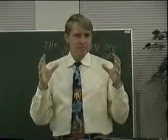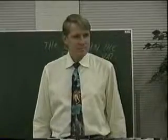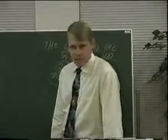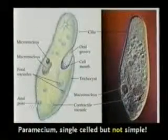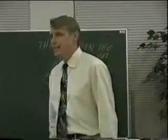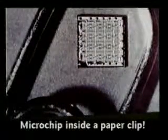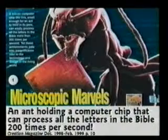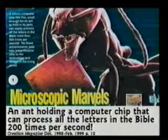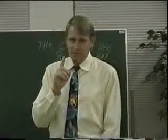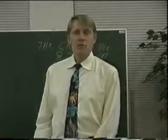It's like walking into a shop full of tools — all of those tools are designed to do something, and each tool has a bunch of parts to it. A paramecium is a single-celled organism — you can put thousands into one drop of water. Real tiny, but each one is more complex than a space shuttle. Smaller is not simpler. Here's a microchip inside a paper clip; this ant is holding a microchip. That little microchip can process every letter of the Bible 200 times in one second. Smaller is not simpler — smaller is more complex.